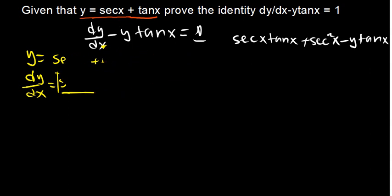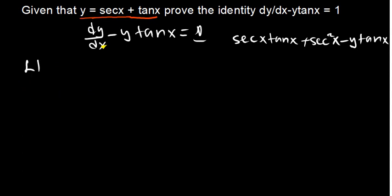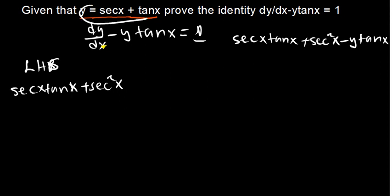We are proving left-hand side equals right-hand side, so I write the left-hand side. We have sec x·tan x plus sec squared x, then minus y. We know what y is, so where there is y I put brackets and substitute sec x plus tan x, with tan x outside.